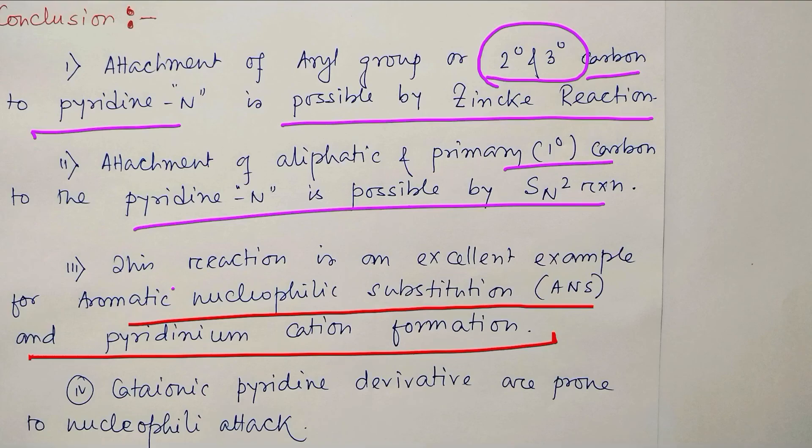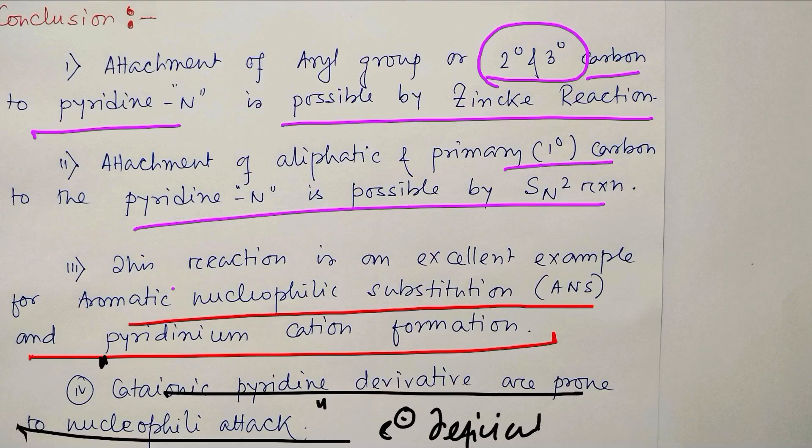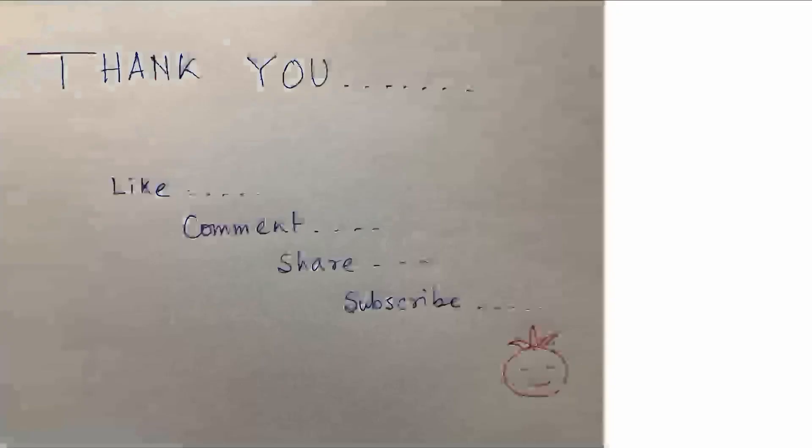This is a very unique example, and the most interesting point is that cationic pyridinium derivatives are prone to nucleophilic attack because of electron deficient nature. So nucleophile can attack very easily. So this is the today's discussion. I hope you have learned a lot from this lecture.